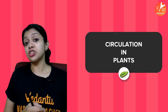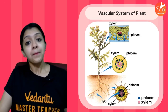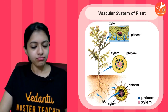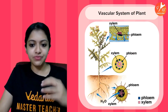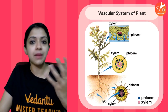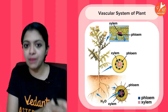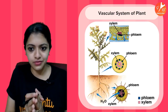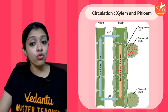Now coming to circulation in plants: plants have a vascular system with specialized conducting tissues — xylem and phloem. Xylem carries water and dissolved minerals from the soil to the upper parts of the plant body. Phloem can be compared to a food delivery service — it transports food prepared in the leaves (the kitchen) to different destinations as and when required.